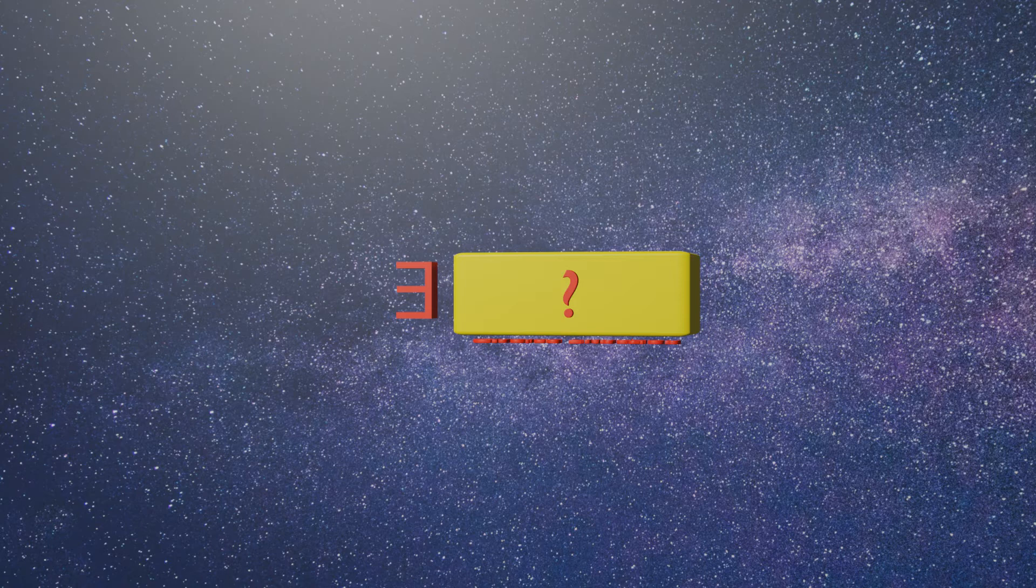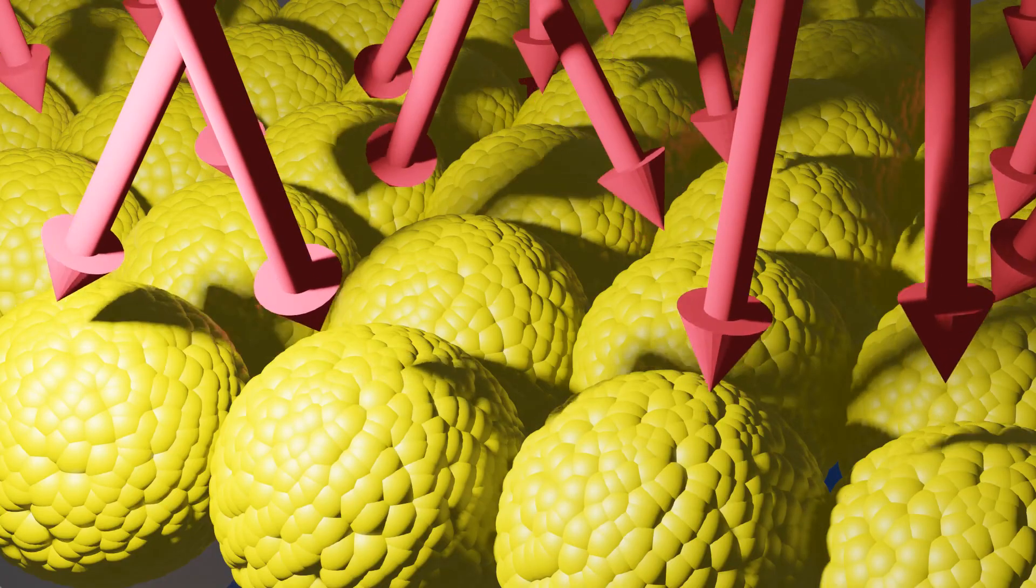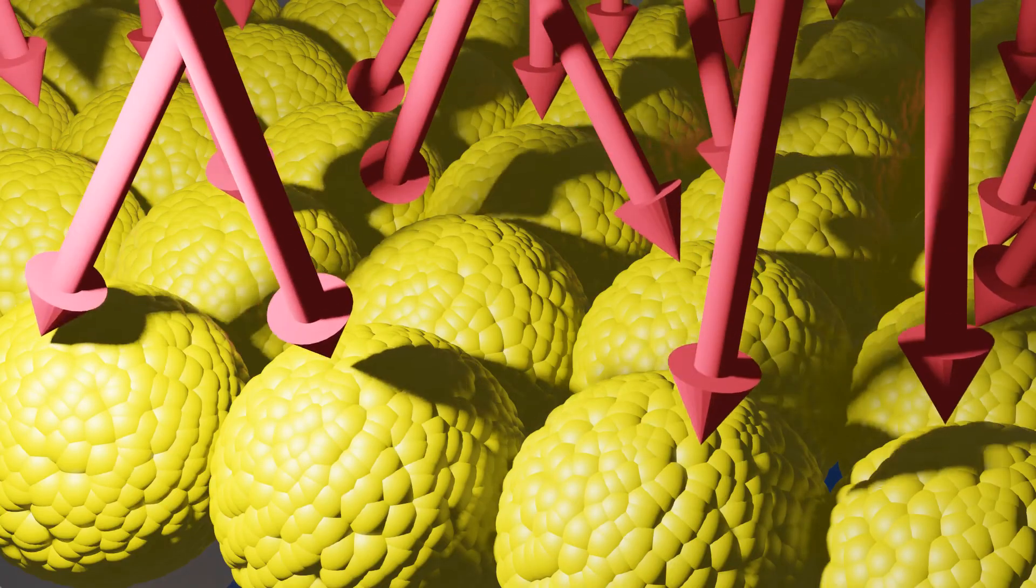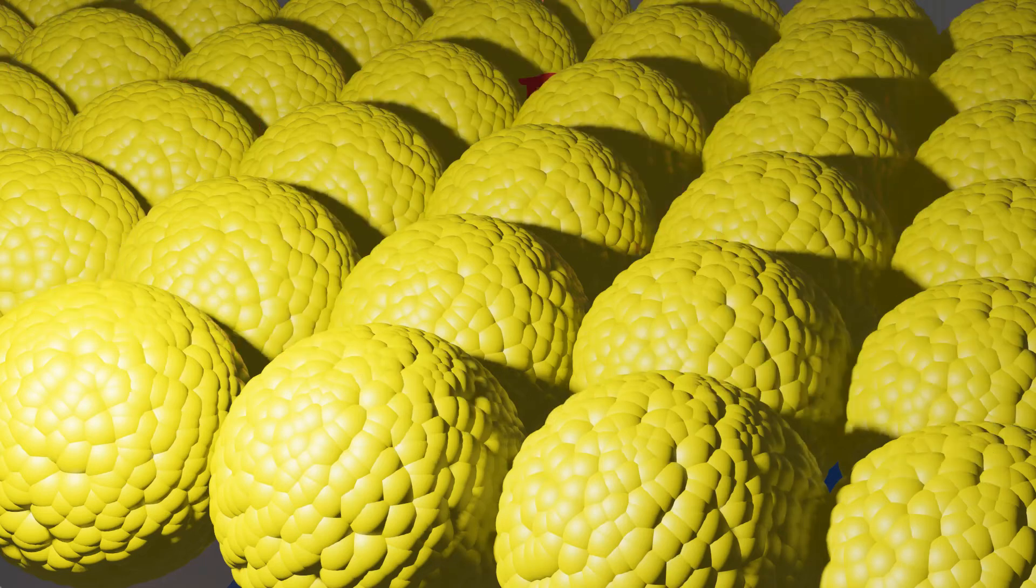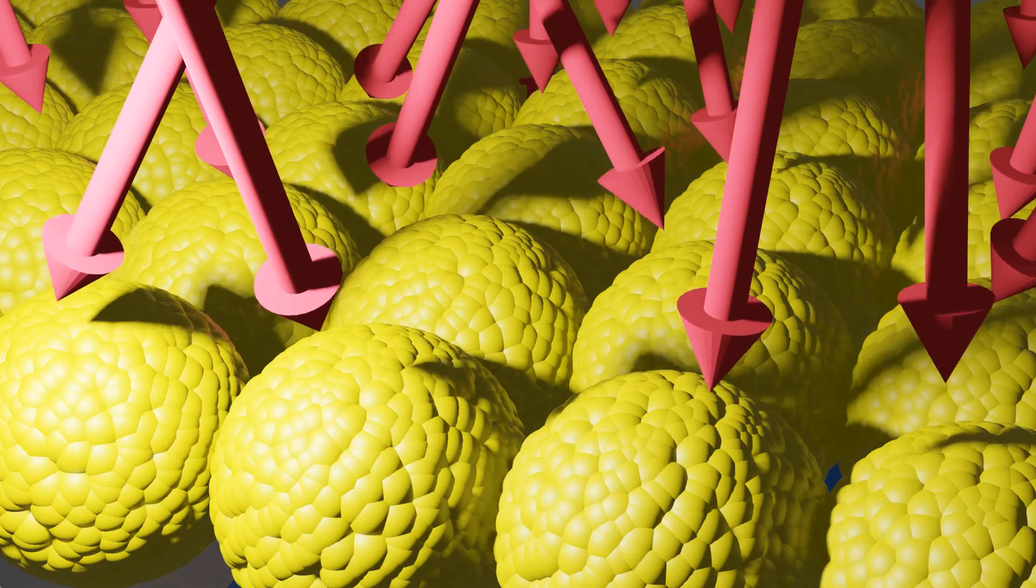The axiom of choice has weird effects precisely because it is so unlimited. It tells us that given any infinite collection of infinite sets, we can pick one element from each set, even if the sets are too big to really understand, and even if we don't have any extra structure to guide us.